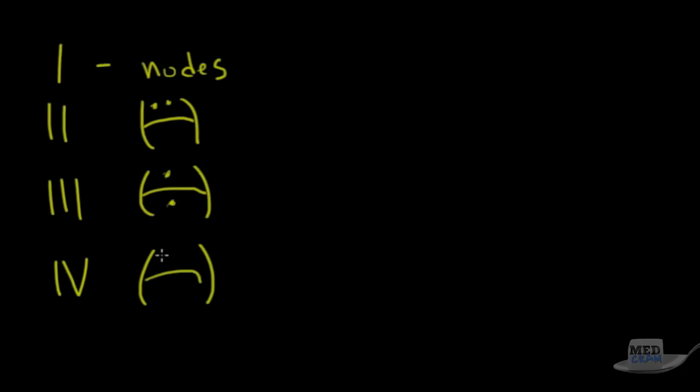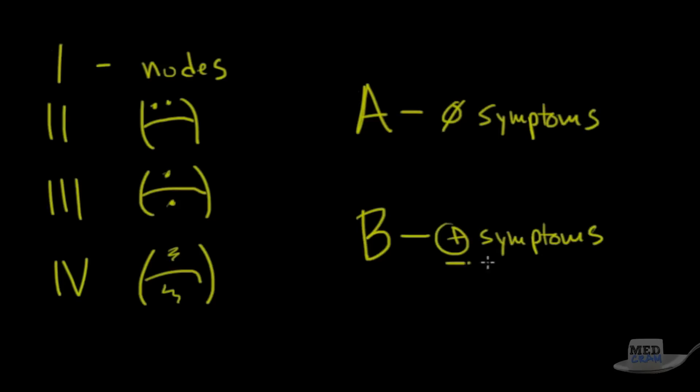And then finally, stage four means that it's basically disseminated everywhere. And then there are two types of stages in addition to that, which is A and B. You'll have stage one A or two A or three A or four A, etc. A means that there are no symptoms. And then B means that there are symptoms. So this is where we get the term B symptoms from. What are B symptoms? These are like constitutional symptoms like fevers, night sweats, chills, fatigue, these types of things. So you could have a three B or two A. This is basically how the staging is done. Staging is not that accurate in terms of prognosis. It's more of the grade of the Hodgkin's lymphoma, which we're going to talk about, which determines more the prognosis.